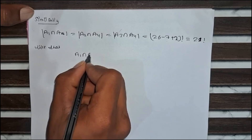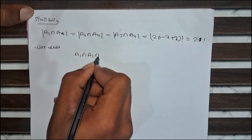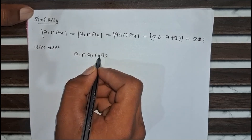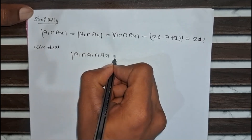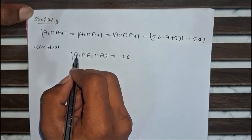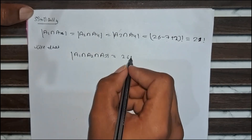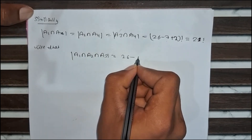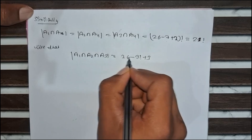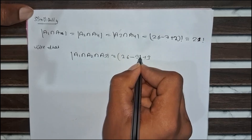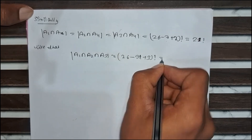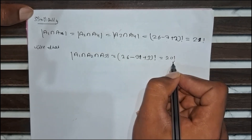For A1 ∩ A2 ∩ A3: since each of A1, A2, A3 has three letters, that is nine letters total forming three blocks. So we get 26 minus 9 plus 3 factorial, equals 20 factorial.